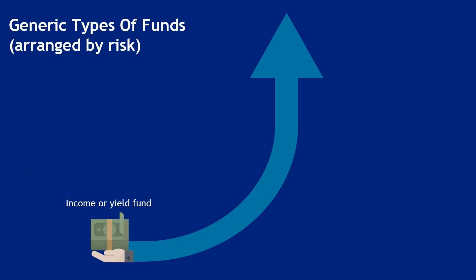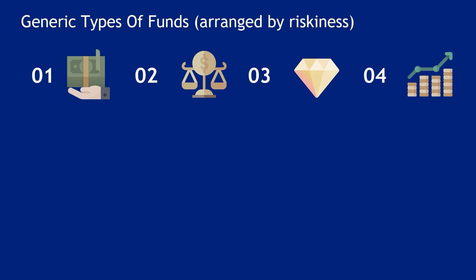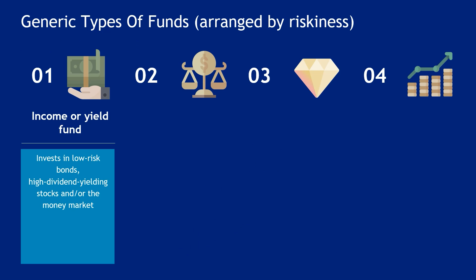Generic Types of Funds. As the risk increases, so does the required return. First, Income or Yield Fund: invest in low-risk bonds, high-dividend-yielding stocks, and or the money market.